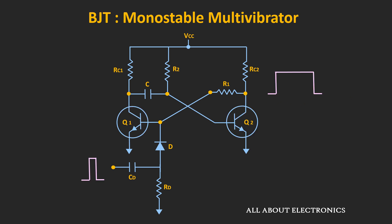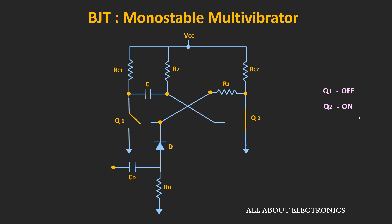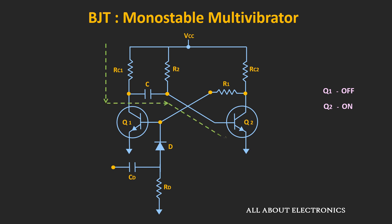As soon as we apply the trigger signal, momentarily the output goes into the unstable state, and then comes back into the stable state. In the stable state, Q2 is ON and Q1 is OFF. In this condition, capacitor C charges through this path. Since Q2 is ON, the voltage between the base and emitter terminal equals 0.7V, so in the stable state the capacitor C charges up to the voltage Vcc minus Vbe.